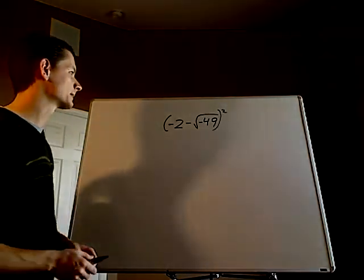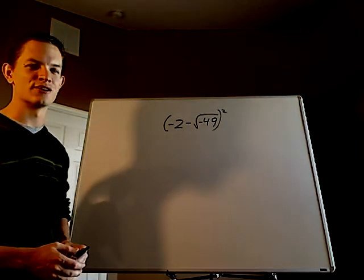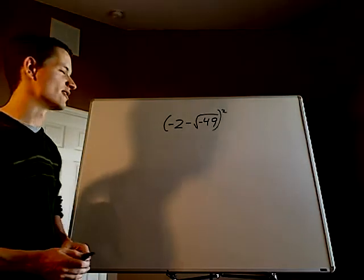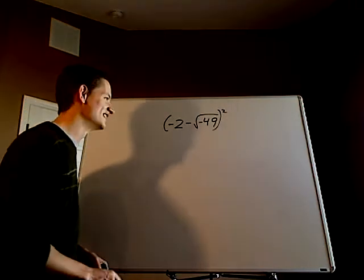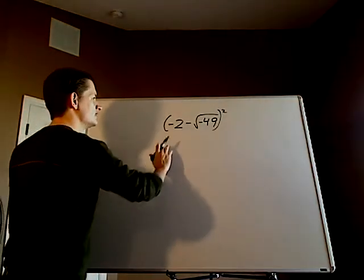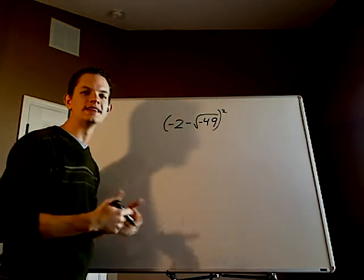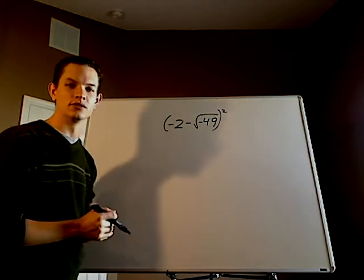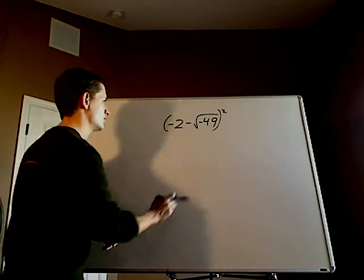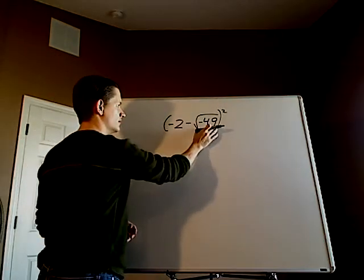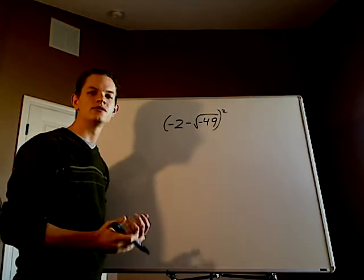So try this on your own — pause the video and try it on your own. Alright, I'm assuming you paused the video and already did this problem. So what you want to do first is work inside-out, like how you would normally do when simplifying something. The innermost part is the negative 49 underneath the radical, so you want to do that first.